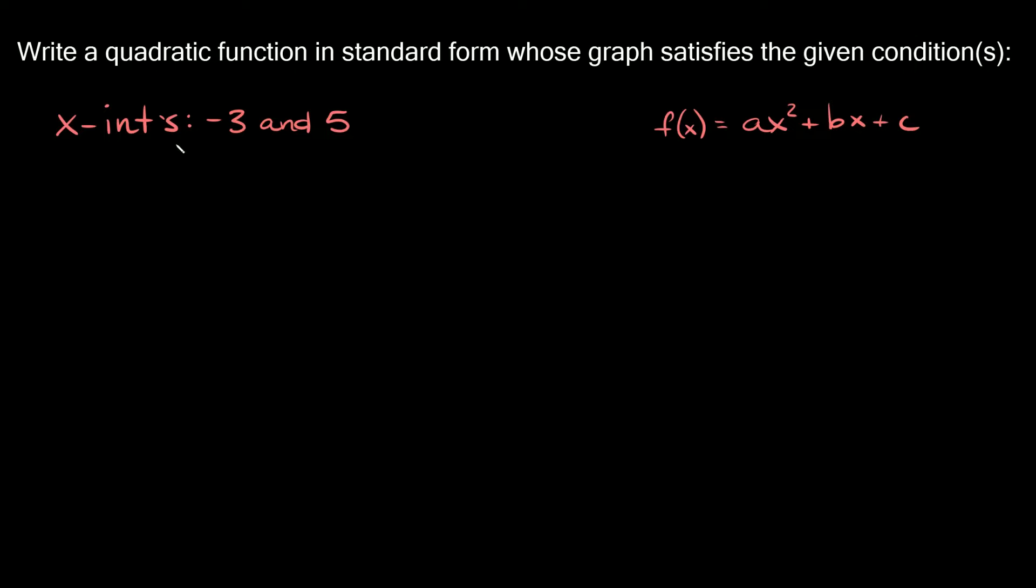Now since it gives us the x-intercepts, we can use intercept form of a quadratic in order to write our first function. And remember intercept form is this function right here. So it's f of x is equal to a times x minus p times x minus q. Okay, a right here is just a number, it's just a coefficient. It can be any number positive or negative. But then the two main things you want to look at are p and q, because p and q are your x-intercepts.